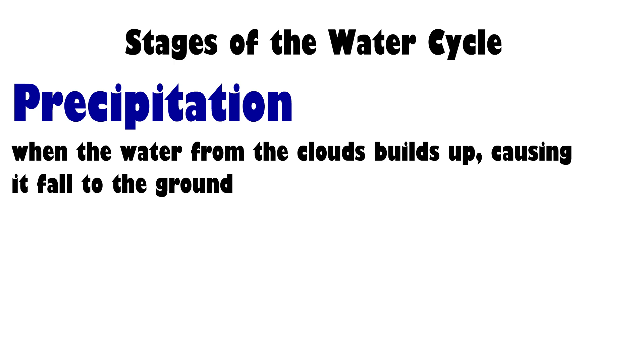After that, there is precipitation. This happens when there is so much water in the clouds that the clouds become too heavy. At this point, the water cannot hold all these droplets of water, so the water falls back into the ground as rain, snow, hail, or even sleet.